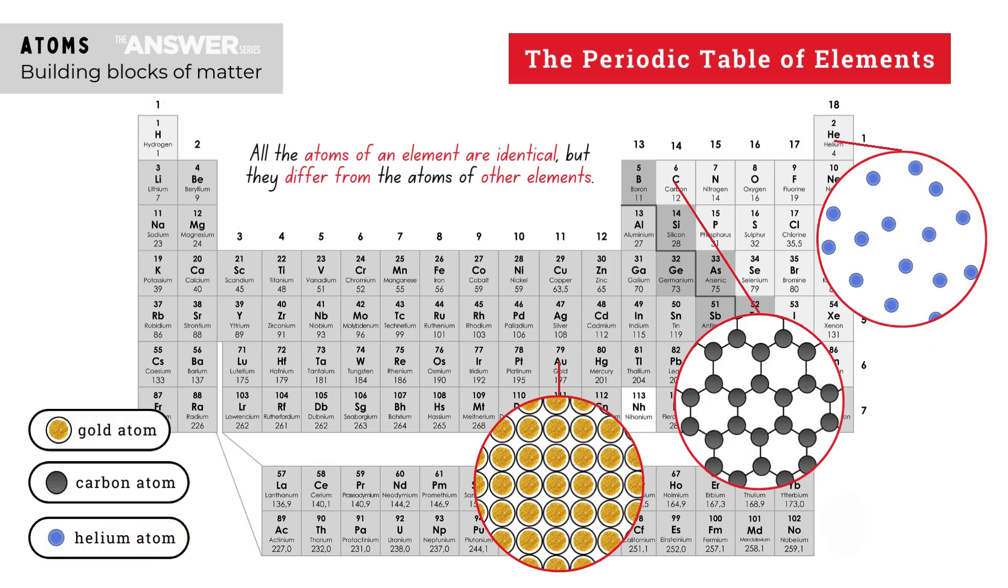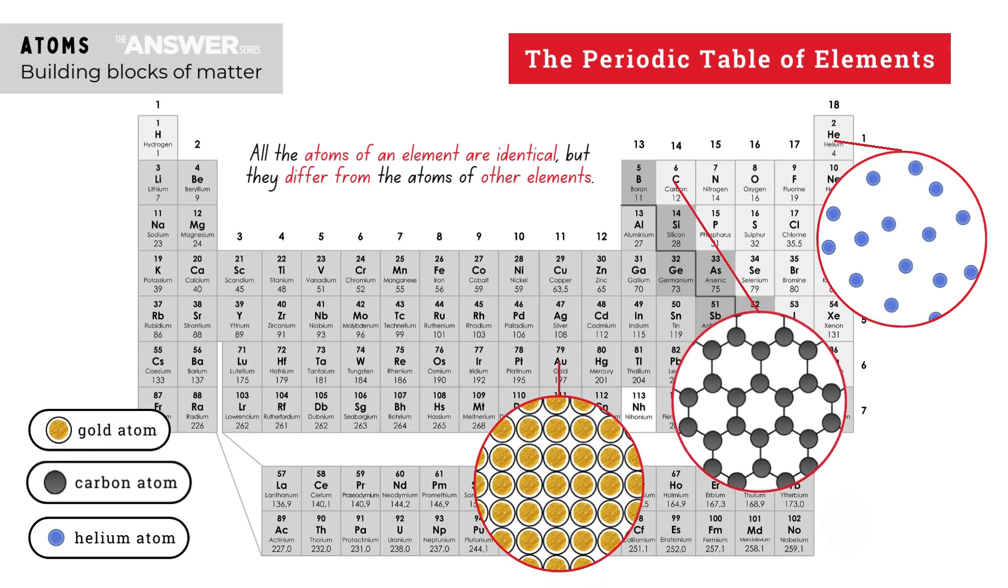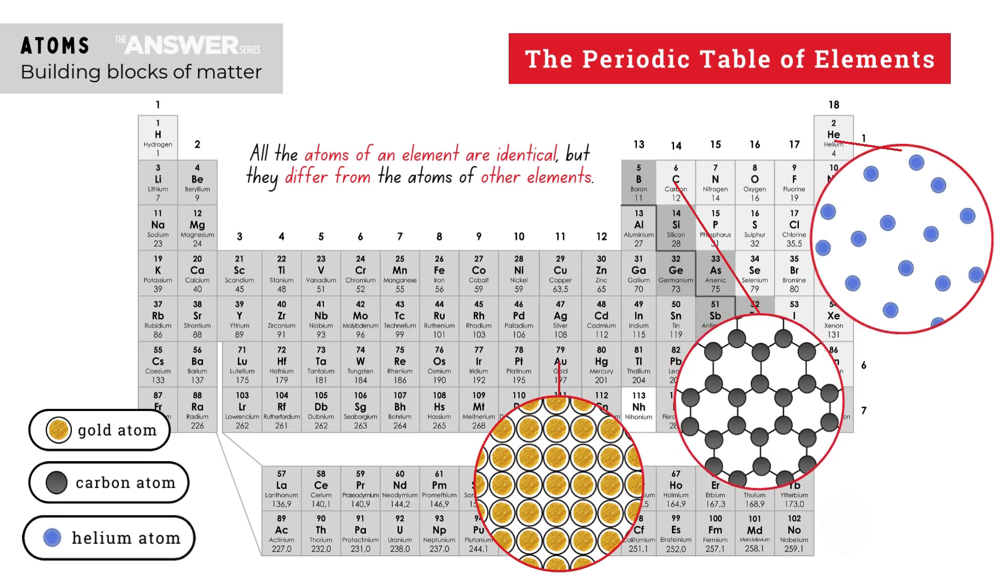So you can see that each element consists of its own unique atoms. In other words, all the gold atoms are the same, but they're different to the carbon atoms and the helium atoms.